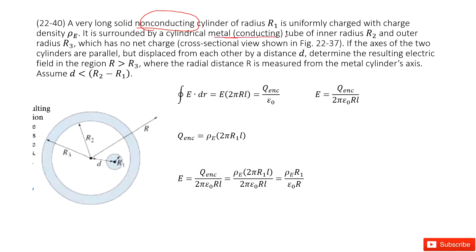This is a conducting tube. The inner radius R2, outer radius R3. And now there is no net charge. We need to find the electric field at R.